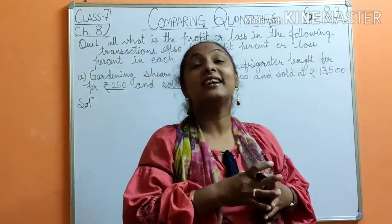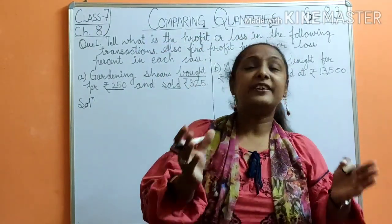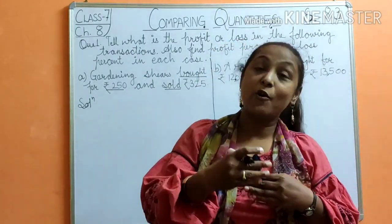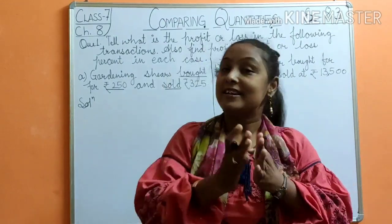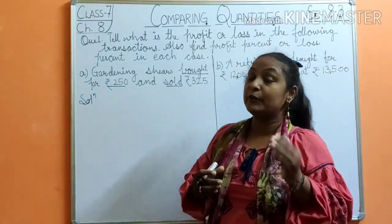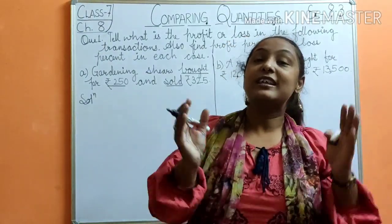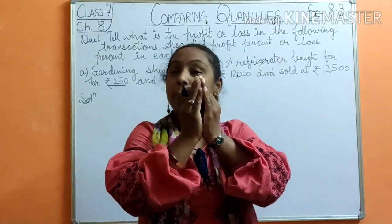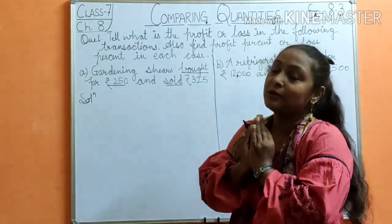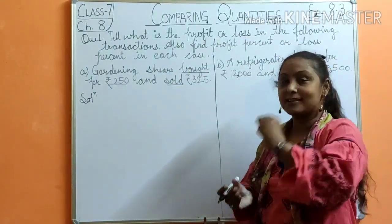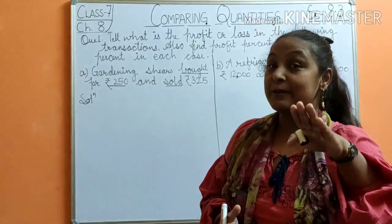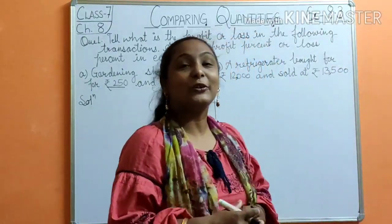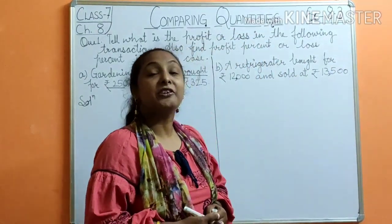In this question, transactions are happening and we need to find cost price, profit or loss, and the percentage side by side. First of all, we have to find where CP and SP are, and then find profit or loss. So let's see the question attempt.